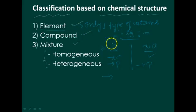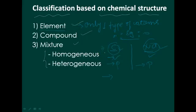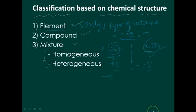An element is made up of only one type of atoms. Carbon is an element and sodium is also an element — carbon made up of its own atoms and sodium made up of its own atoms. Examples for elements include carbon, sodium, and oxygen.